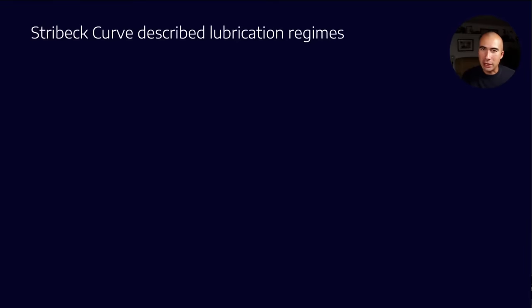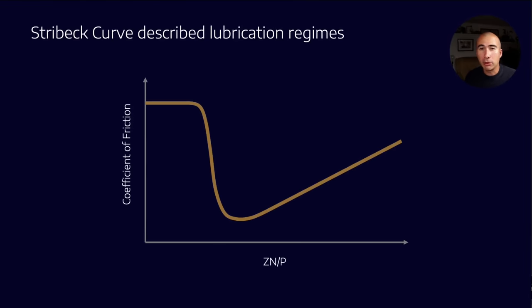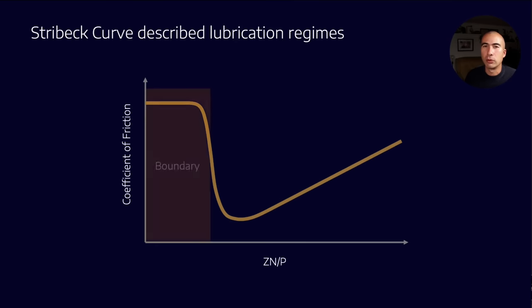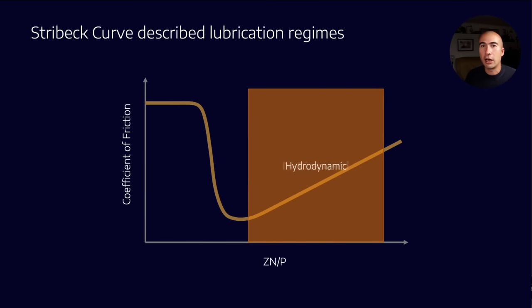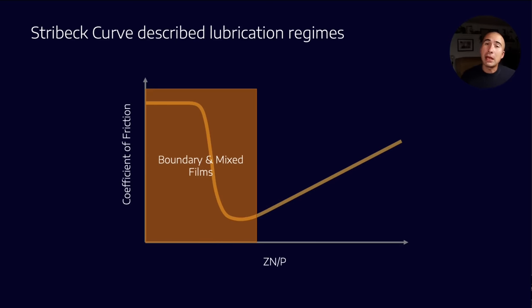Well, first of all, let's go back to our friend, the Strivec curve, which described all our lubrication regimes. There's three different types of lubrication: boundary, mixed, and hydrodynamic. In the boundary and mixed lubrication regime, where we have metal to metal contact, what we need is anti-wear additives.